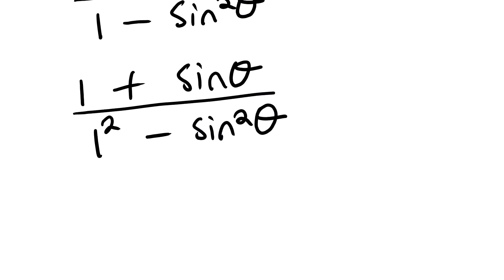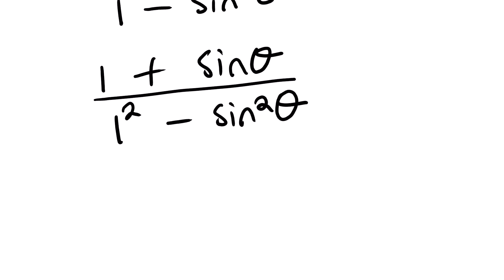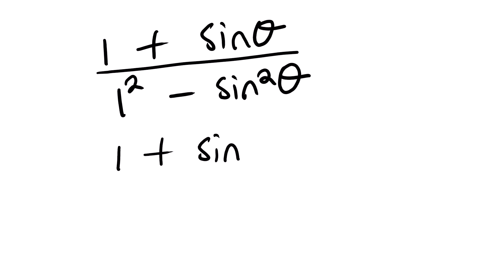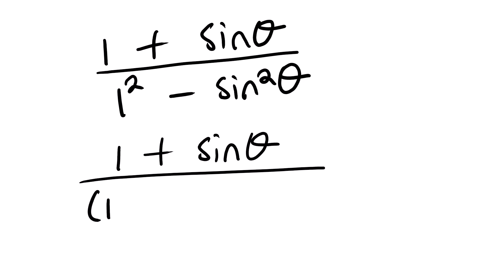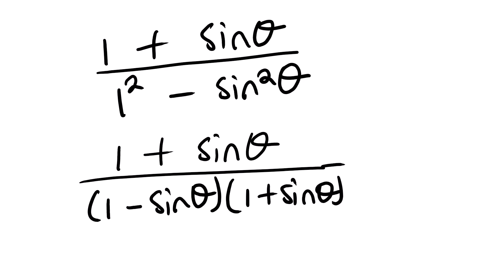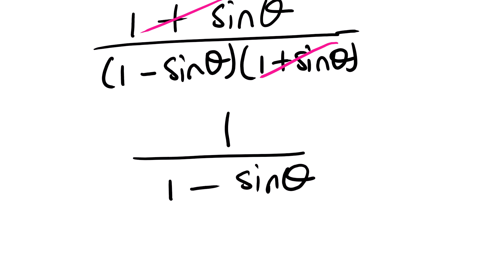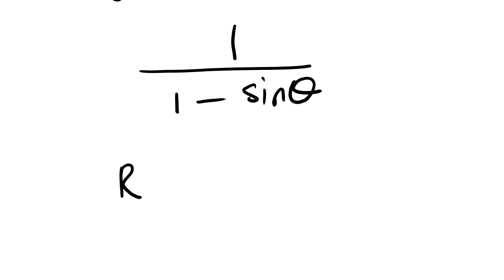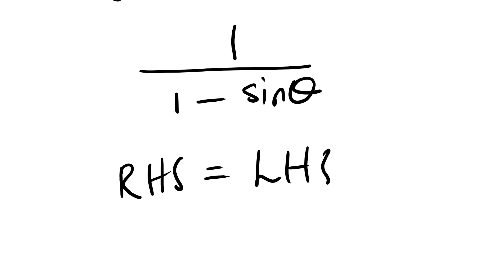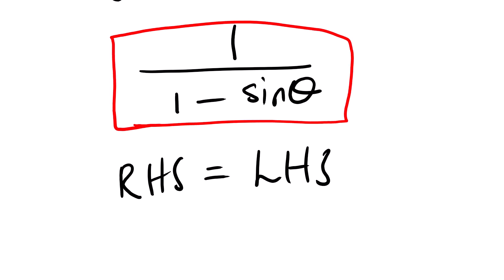Going back to our question, the denominator is a difference of two squares, so we factorize it as (1 − sin theta)(1 + sin theta). We can see that the (1 + sin theta) in the numerator and denominator cancel, leaving us with 1 over (1 − sin theta). You can now see that the right hand side equals the left hand side — we have proved this identity. That is it for this lesson video. This is Wahula SJ. Thank you very much.